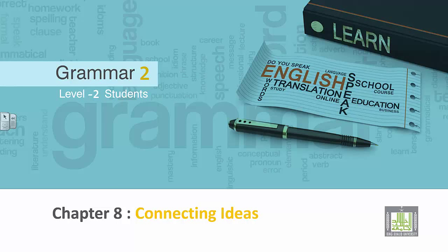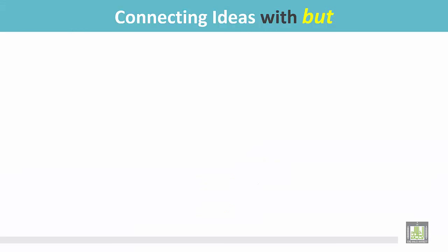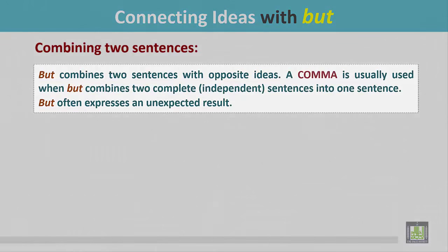Grammar 2 for level 2 students, Chapter 8: Connecting ideas. Connecting ideas with 'but' — combining two sentences. 'But' combines two sentences with opposite ideas. A comma is usually used when 'but' combines two complete sentences into one sentence.